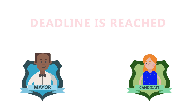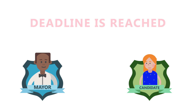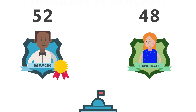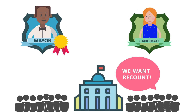After the deadline is reached, it is revealed by the results that Nathan has won and will be the mayor for another term. Gina is displeased with this and accusations of fraud come from her supporters.